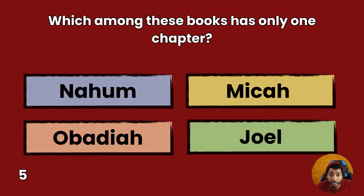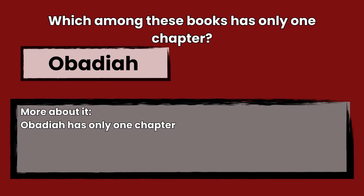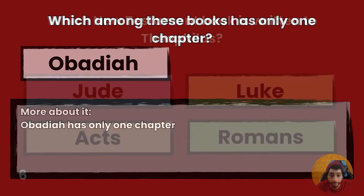Question 5: Which among these books has only one chapter? Nahum, Micah, Obadiah, or Joel? Answer: Obadiah. Obadiah has only one chapter.